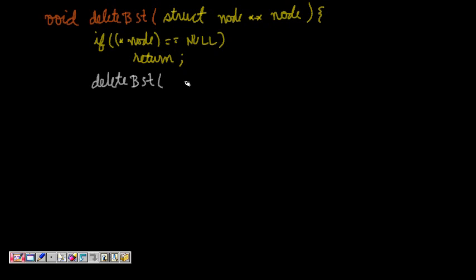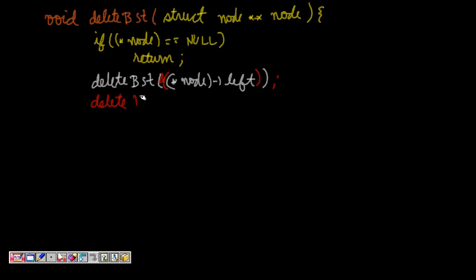We pass pointer-to-pointer throughout. So we call deleteBST with &(*node)->left, and then again call deleteBST with &(*node)->right. This ensures we can modify the pointers directly.